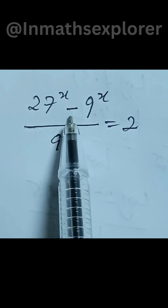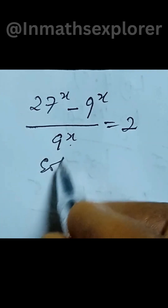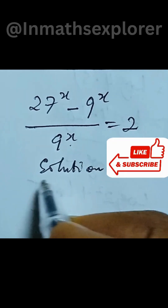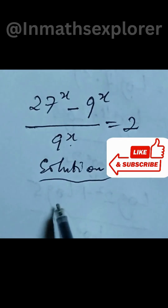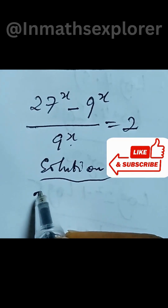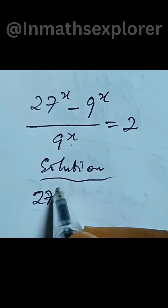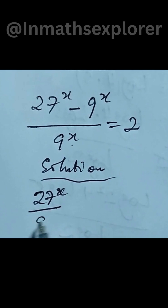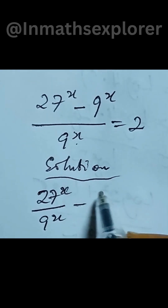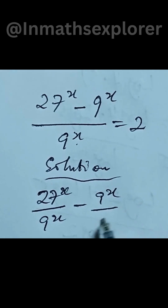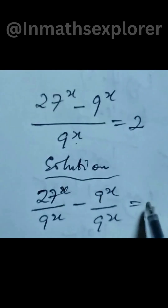How to solve 27 to the power of x plus 9 to the power of x over 9 to the power of x equal to 2. So we have the solution. Here I'll divide both sides separately: 27 to the power of x over 9 to the power of x, minus 9 to the power of x over 9 to the power of x, everything equal to 2.